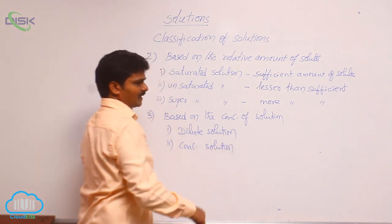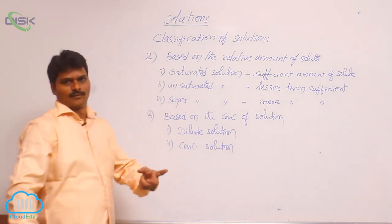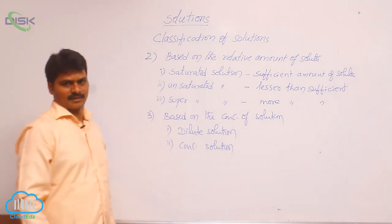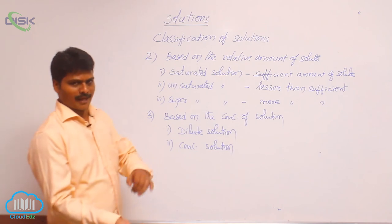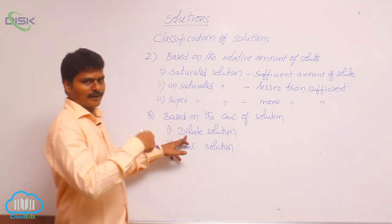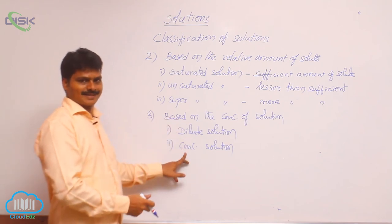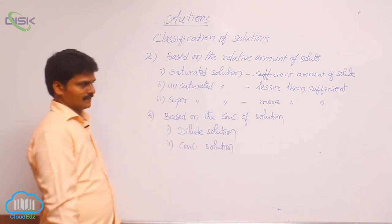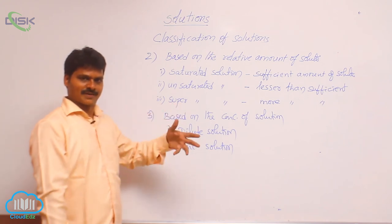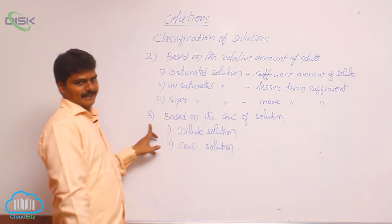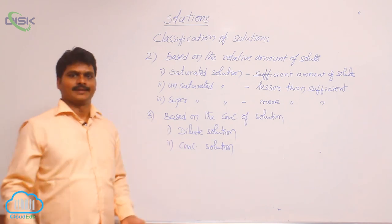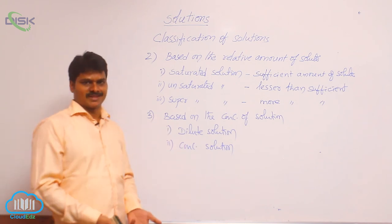For example, if there are two solutions — one molar and two molar — comparative to two molar, one molar is called dilute solution. Comparative to one molar, two molar is called concentrated solution. So solutions are classified into two types in this third category. Now let us see how to express the strength of a solution.